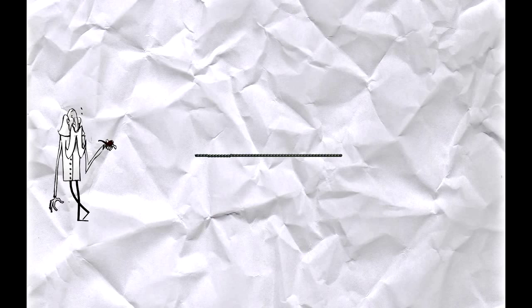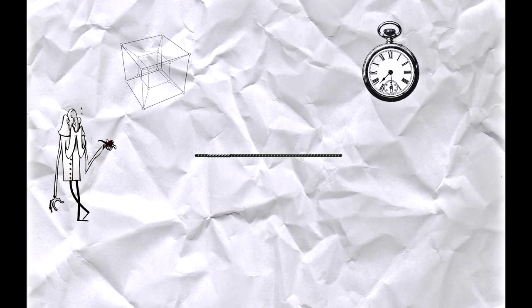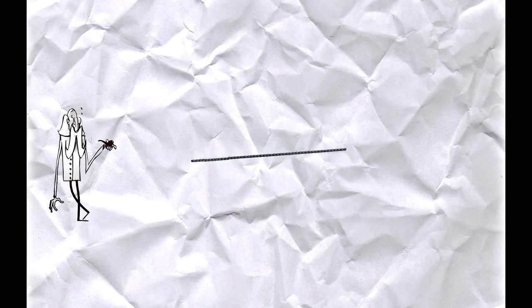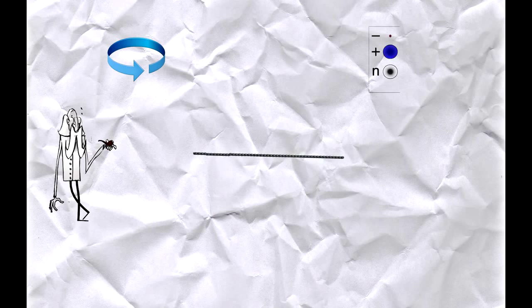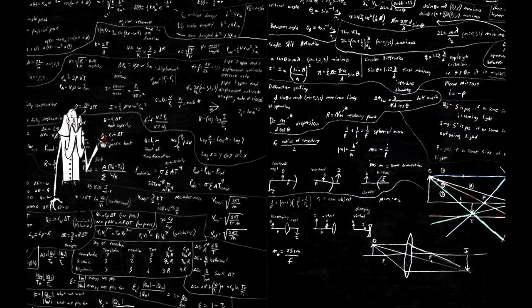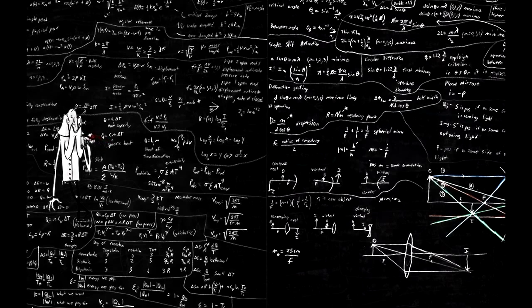Usando las matemáticas, los físicos descubrieron que una cuerda ocupa espacio, tiempo y 6 o 7 dimensiones superiores. El movimiento de una cuerda en una de estas dimensiones puede producir efectos que podemos medir como el spin o la carga de una partícula. La energía de vibración de una cuerda determina la masa de la partícula, dada por la famosa ecuación de Einstein E igual a mc cuadrada. Los físicos esperan que este modelo conduzca a una teoría del todo, que incorpore los cuatro fuerzas fundamentales y toda la materia conocida en el universo.